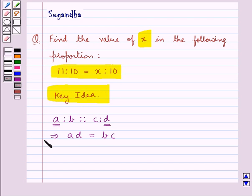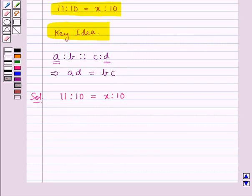Now we move on to the solution. We are given that 11 is to 10 is equal to x is to 10, that is 11, 10, x and 10 are in proportion. So the product of extremes is equal to the product of the means.